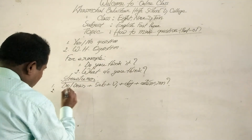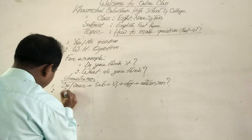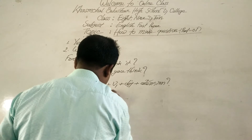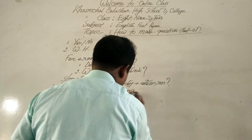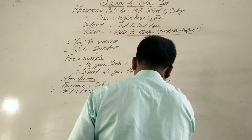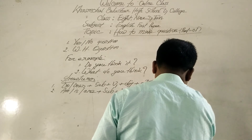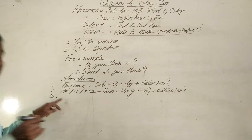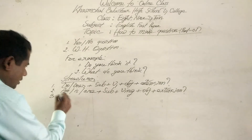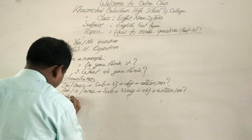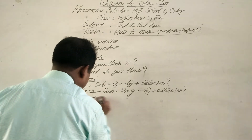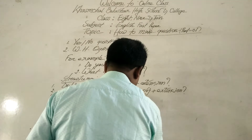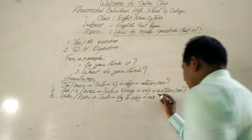Number two: present continuous tense. Am/Is/Are + subject + verb base form + ing + object + extension. Number three: present perfect tense. Have/Has + subject + verb past participle + object + extension.